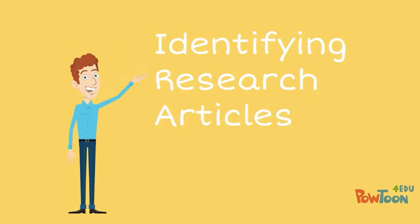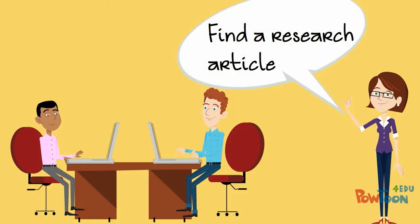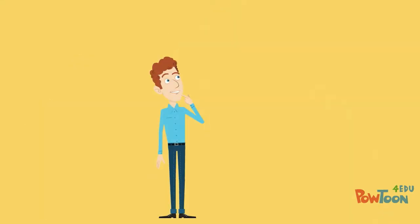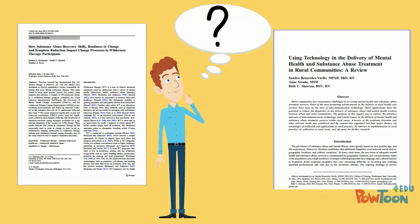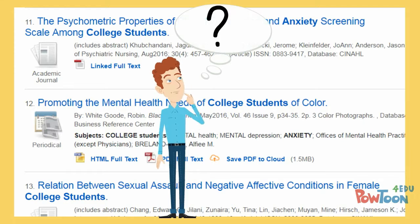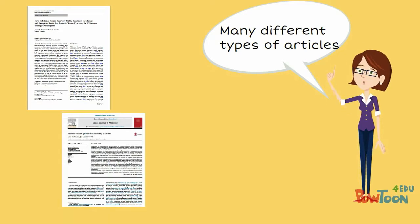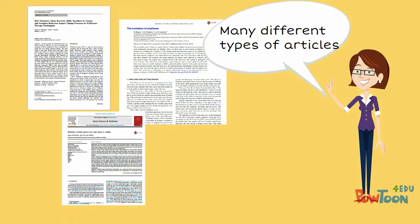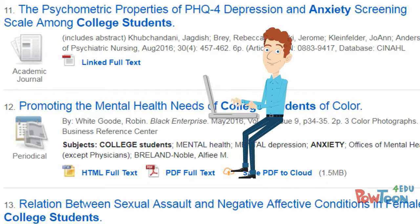In his psychology classes, Luke was often required to use research articles. The first time he was asked to find a research article, he was a little confused. Was a research article the same as a scholarly article? Were all the articles he found in a database research articles? Luke's professor explained that scholarly journals publish many different types of articles, and not all of them are research articles. When he searched in a database, not all of the articles he would find would be research articles.